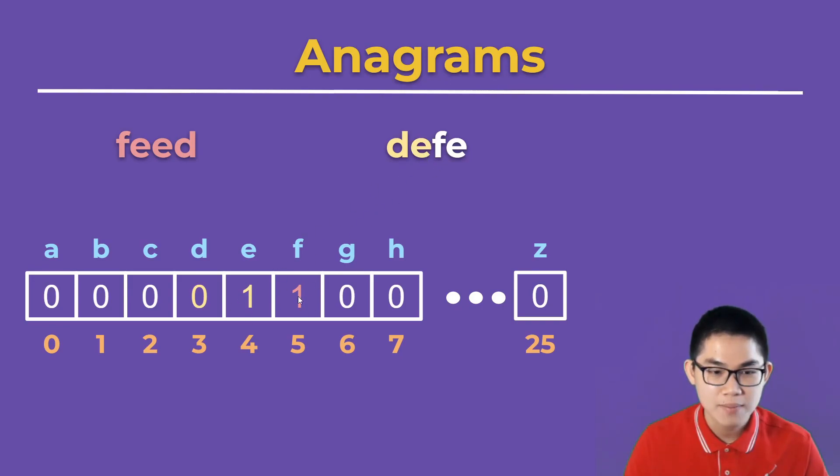For F, 1 becomes 0. And E, 1 becomes 0. You can see that all the numbers in the array are zeros, and this indicates that both of these words are anagrams.